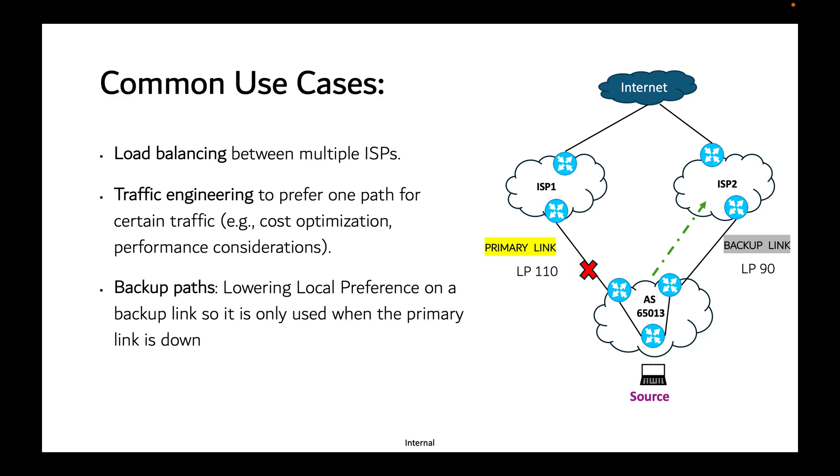For example, if you have two links to exit points—a higher bandwidth link towards ISP1 and a lower bandwidth link towards ISP2—you can make sure when the primary link is not available, the backup link is used. Increase the local preference towards ISP1 because when local preference is higher, it will prefer ISP1. When the link goes down, traffic will automatically shift towards ISP2.